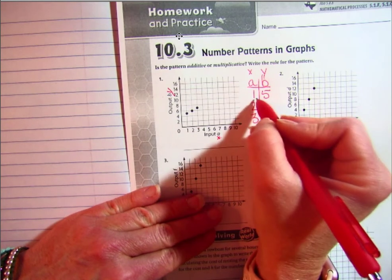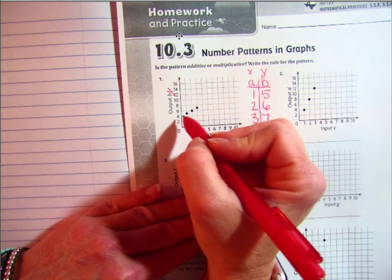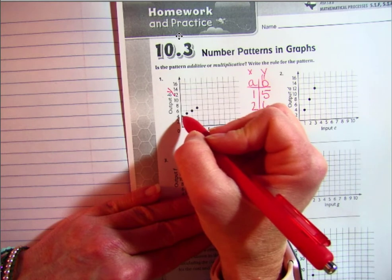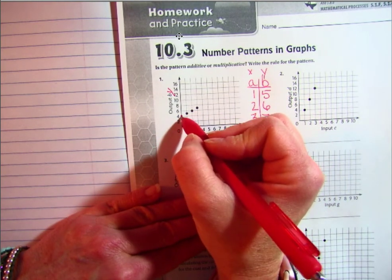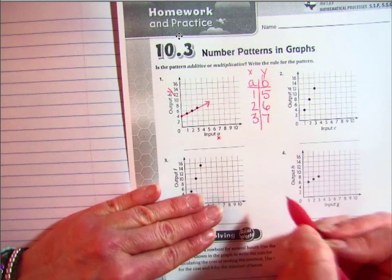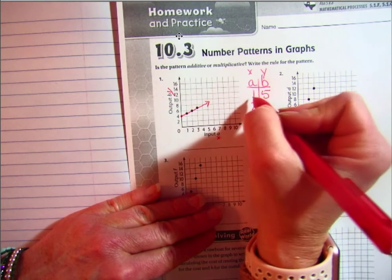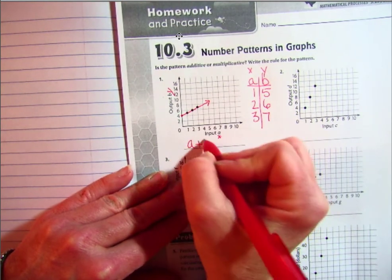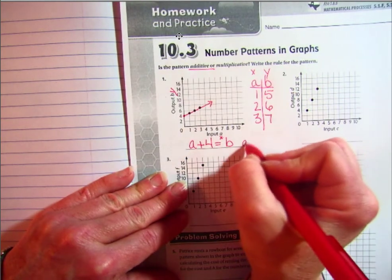I can already tell this is not going to be multiplicative—1 times 5 is 5, 2 times 5 is 6, that makes no sense. This is going to be additive. Do you see how it goes to this point over here? I know if I plotted out 0 right here, it would be on the y-axis and it would go this way. So I can see that this is an additive pattern because they're adding 4 each time. To write the rule, I'm going to write A plus 4 equals B. And on this one, they want you to actually write that it's additive.